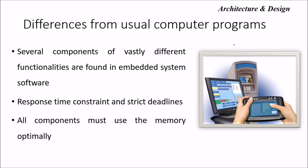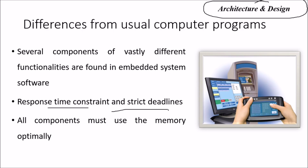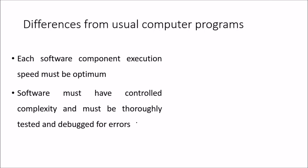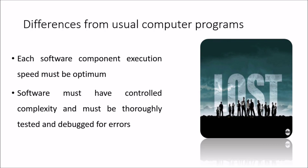What is the difference from usual computer programs, in terms of architectural design? Several components with different functionalities are found in embedded system software, and deadlines are very strict. All components must use memory optimally, and each software component's execution speed must be optimal. Software must also control complexity and must be thoroughly tested and debugged for errors.